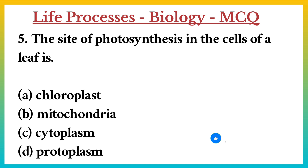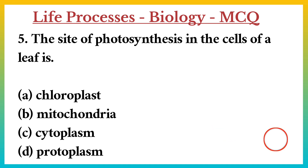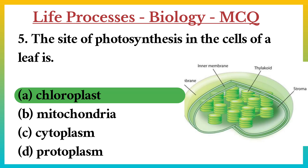Question number 5. The site of photosynthesis in the cells of a leaf is? A. Chloroplast. B. Mitochondria. C. Cytoplasm. D. Protoplasm. Answer: A. Chloroplast.